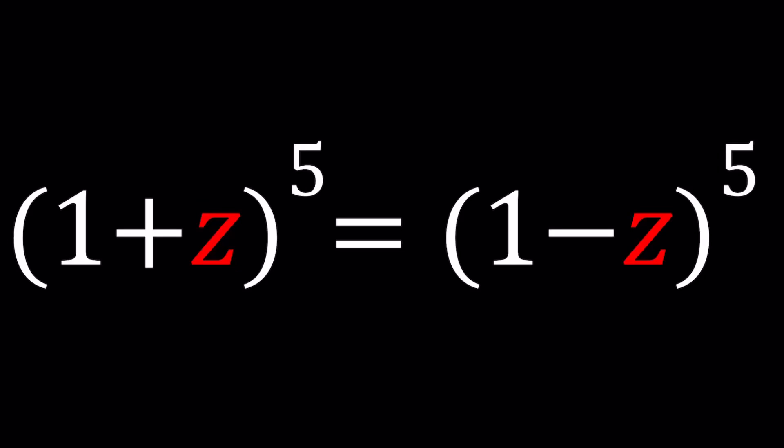Hello everyone, welcome to A plus B I. This channel is all about complex numbers, and in this video we're going to be solving a quintic-looking equation. I say quintic-looking because we have to make sure it is quintic or not. We have 1 plus z to the 5th power equals 1 minus z to the 5th power.